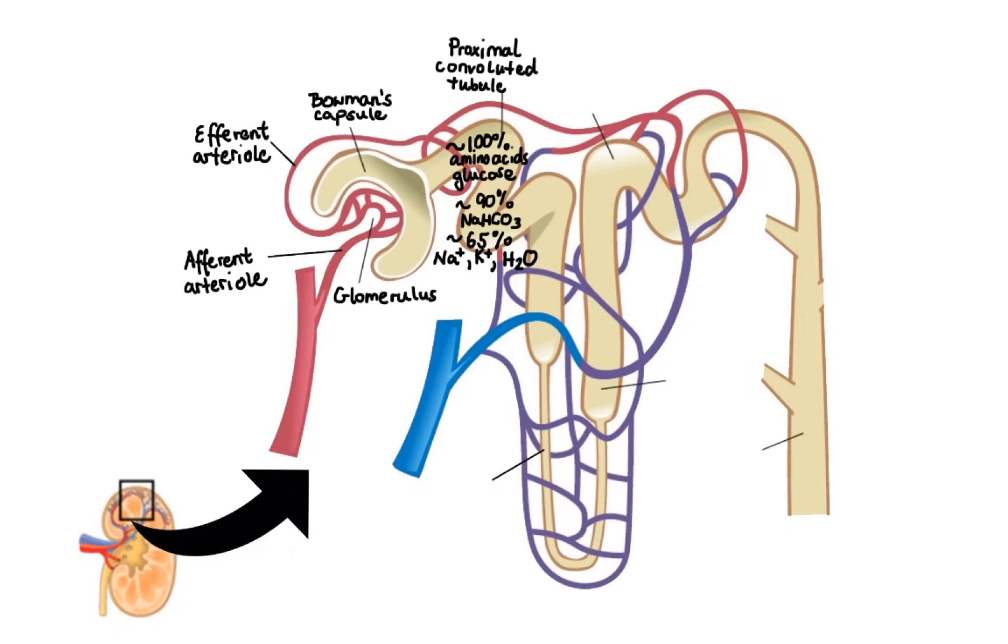The next major region through which the filtrate travels is the descending and ascending loop of Henle, which passes into the medulla of the kidney. Now, the descending limb has walls permeable to water, but impermeable to sodium. So as the filtrate travels down, water leaves, but sodium tends to stay, making the filtrate more concentrated.